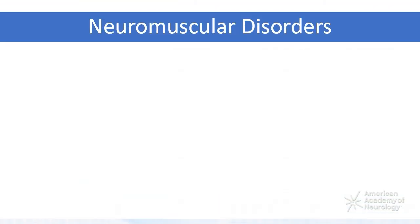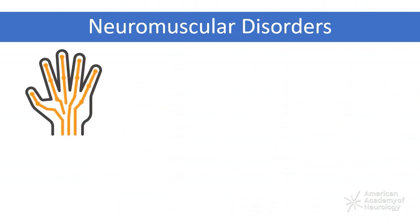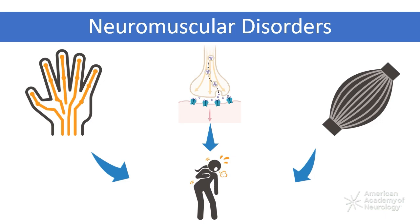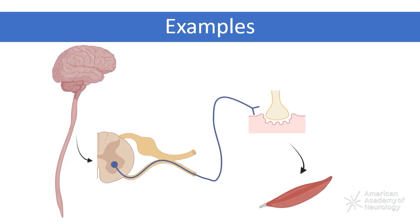Neuromuscular disorders include a wide range of diseases that affect the peripheral nerves, neuromuscular junction, or muscle. Some of these diseases can affect the respiratory system, which leads to neuromuscular respiratory insufficiency and failure. This image shows the locations along the motor pathway from the central nervous system through the peripheral nervous system where pathology can lead to respiratory weakness.